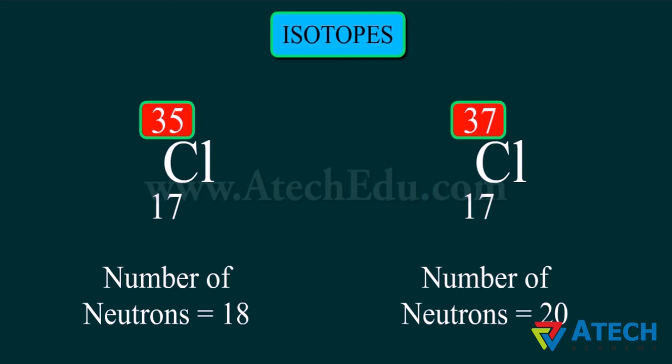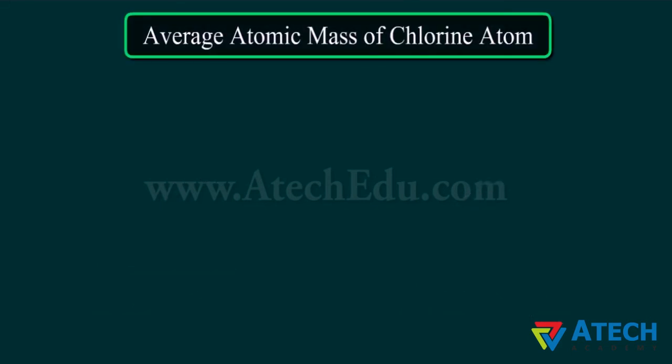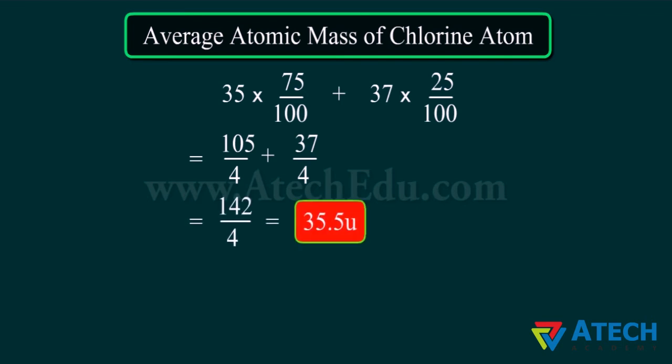Many elements consist of a mixture of isotopes. Chlorine occurs in nature in two isotopic forms with masses 35 and 37 units in the ratio of 3:1. Knowing the percentage of each isotopic form, we can calculate the average atomic mass of chlorine, which is 35.5 units.